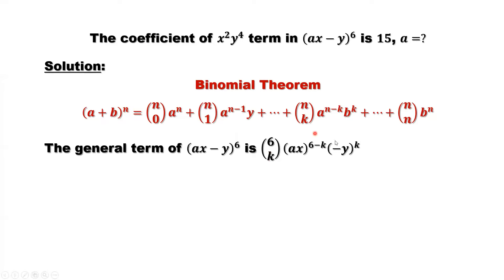This is a general term. Because we only need to find the coefficient of x squared times y to the power 4 term in the expansion, let's check. Comparing the general term with the given term, we can see here y to the power k. k must be equal to 4. We can check here. 6 minus 4 equals 2. That's x squared.